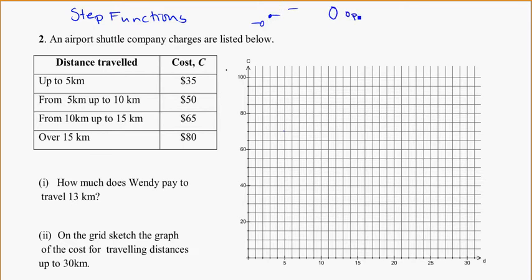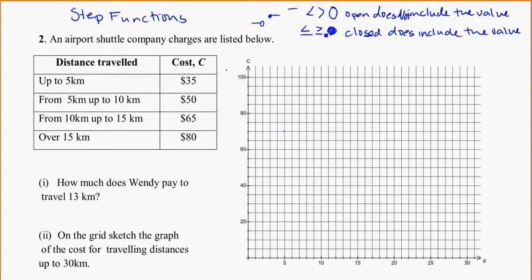So to remind you, an open circle does not include the value that it's circled around. And a closed circle does include the value. And in terms of signage, sometimes we have things like less than or greater than for an open. And sometimes we have less than or equal to or greater than or equal to for a closed dot. So we just will keep that in mind as we go through and see how they end up on these different outcomes here.